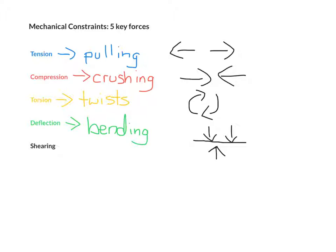Now, the last mechanical constraint is shearing. Now, whenever we use the word to shear, the synonym means to cut. So whenever we're using shearing, we're basically using a cutting force. So the force of shearing is anything that causes a material to cut.